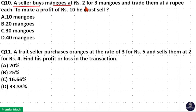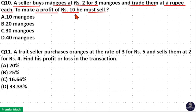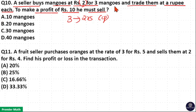A seller buys mangoes at rupees 2 for 3 mangoes and sells them at a rupee each. To make a profit of rupees 10, he must sell how many? The cost price of 3 mangoes is 2 rupees, and he sells 3 mangoes at a rupee each, which means he sells 3 mangoes at 3 rupees.